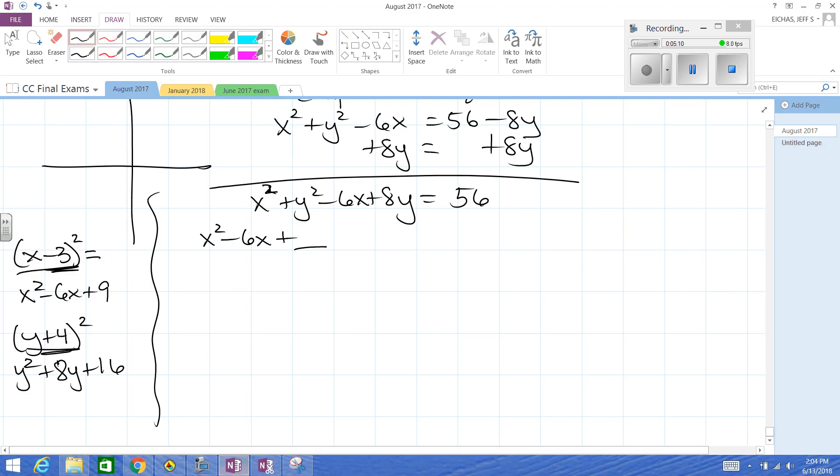So, what you need to realize is that we have this, we have that, but this number, whatever we put here, is going to complete this square. I'm just going to leave that space blank for a minute. Same thing's going to happen over here. Y squared plus 8Y plus some unknown number. That's going to complete the square for this one.